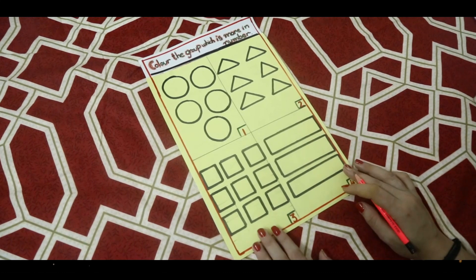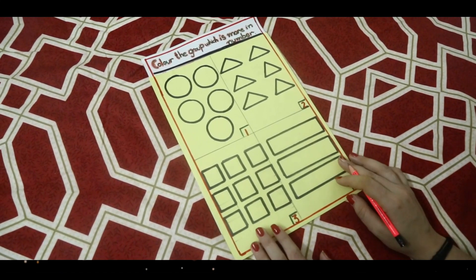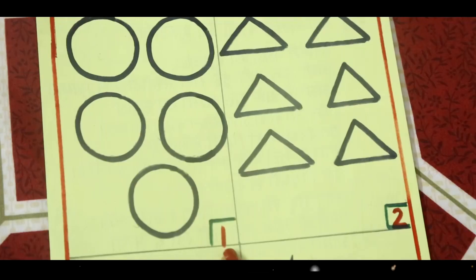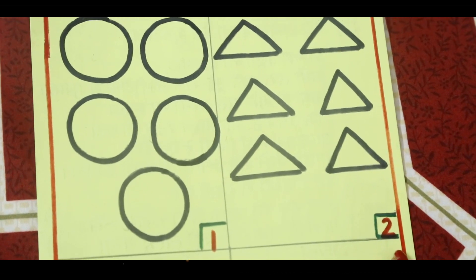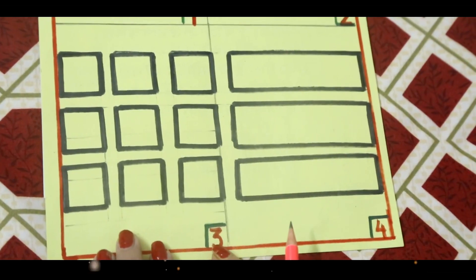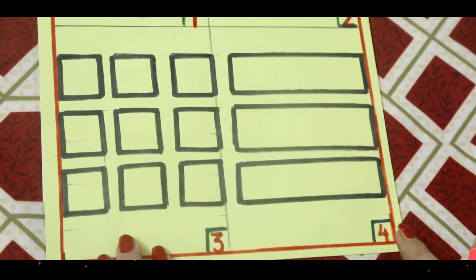In this worksheet, what you have to do? There are four groups. One, two, three and four.